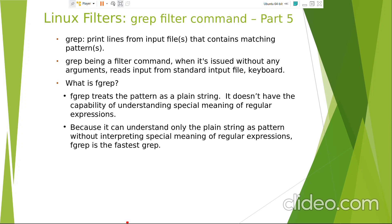Because fgrep can only understand plain strings without interpreting the special meaning of regular expressions, fgrep is the fastest grep. fgrep's code is much smaller compared to grep and egrep. grep comes with a set of functions to interpret special meaning of regular expressions, and egrep has even more additional functions. So grep's code is bigger, egrep's code is still bigger, but fgrep's code is smaller. Hence fgrep loads faster compared to grep and egrep - that's why it's called the fastest grep.